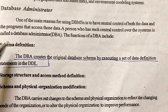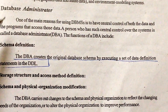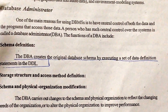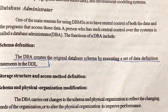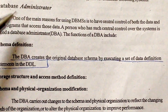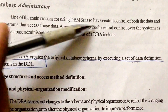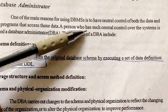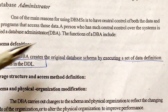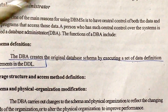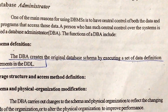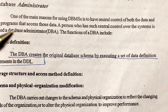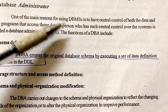Welcome to this session on database administrator. In this video I'm going to discuss what exactly a database administrator does and what his responsibilities are. It plays a major role in DBMS — database management system. One of the main reasons for using DBMS is to have central control of both the data and the programs that access that data. The person who has such central control over the system is called the database administrator, or DBA. Every organization and company has its own database, and one person is responsible for access and making rules for that database.